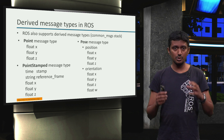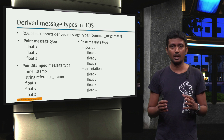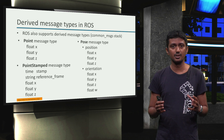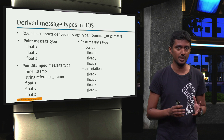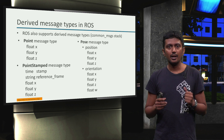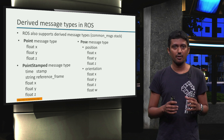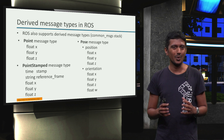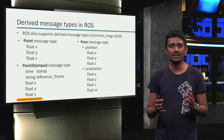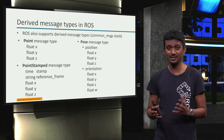Further, ROS also provides message types with a timestamp and a relative or absolute reference in combination with geometric information, like the PointStamped message. This can be really useful when we have things moving — and yes, it would definitely be nice to have things moving in a robotic application.